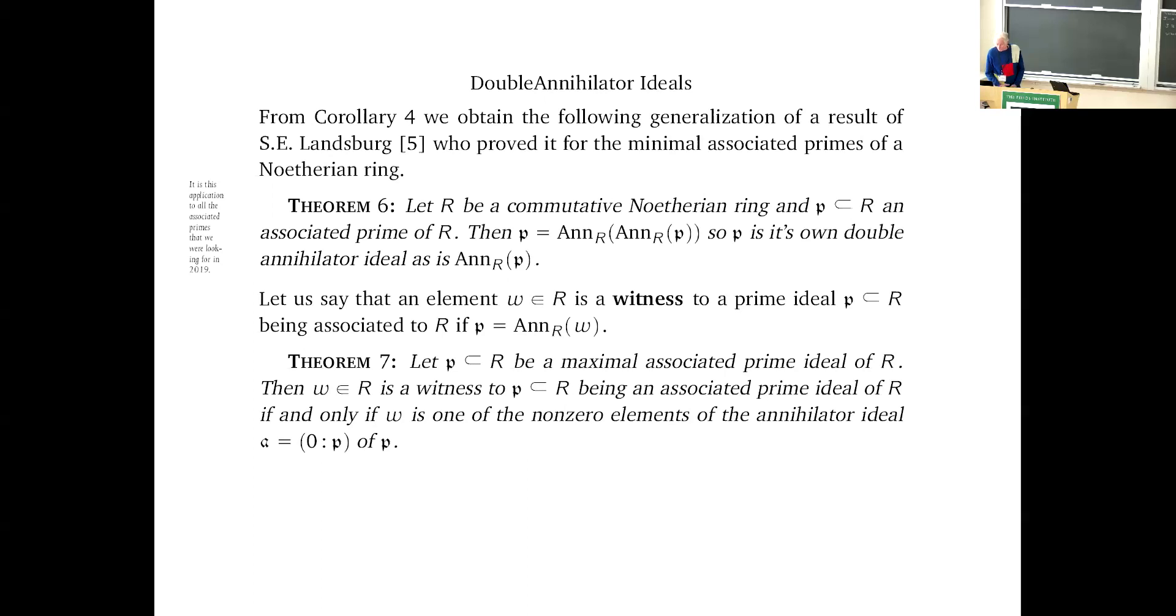And this has a number of amusing consequences. Please ignore the marginal notes. I tried to take them out this morning, but it didn't work. Tech is something I despise. We obtain the following results. Let's say that an element W in R is a witness to a prime ideal P being an associated prime of R. Remember, the associated primes of R are prime ideals which are the annihilator ideal of an element. That element I'll call a witness to the fact that it's an associated prime.